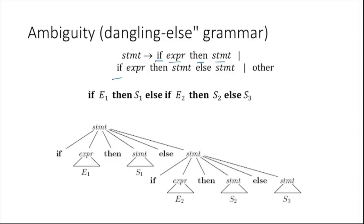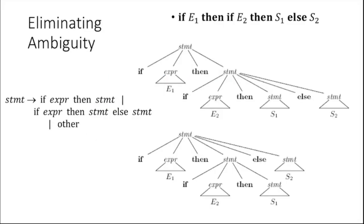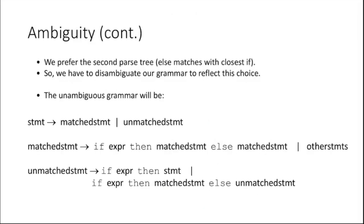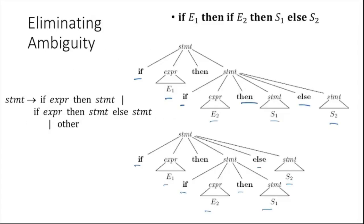With expressions denoted by 'e' and statements by 's', we can write this in shorter form. When you generate a parse tree, the problem is that you can have multiple parse trees for the same input. For example, 'if e1 then if e2 then s1 else s2' can produce two different parse trees. This dangling else problem is an ambiguity problem. We prefer the second parse tree in this case.